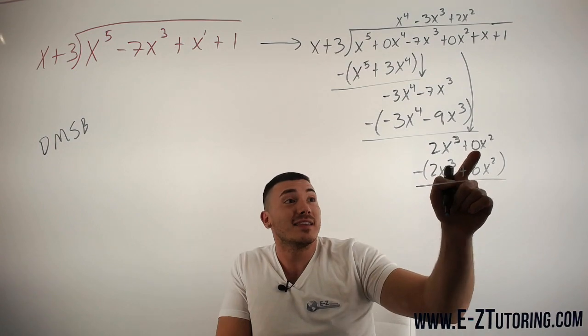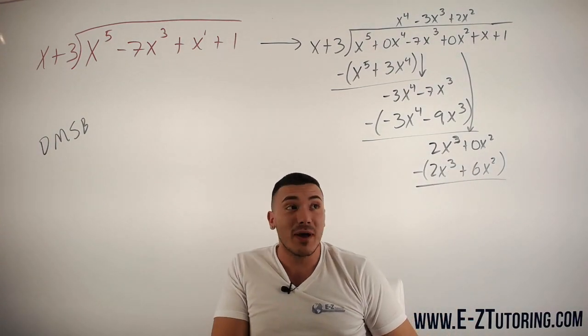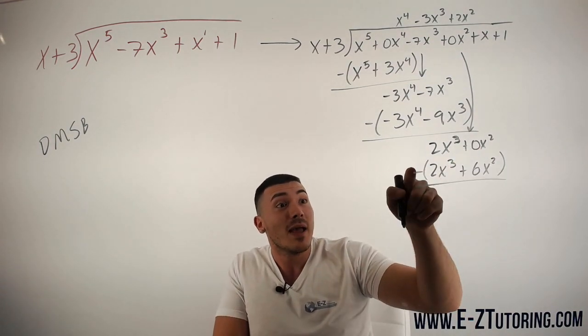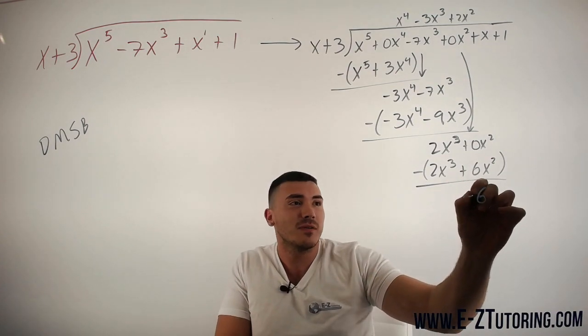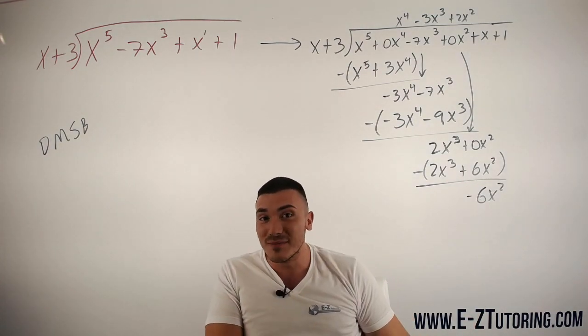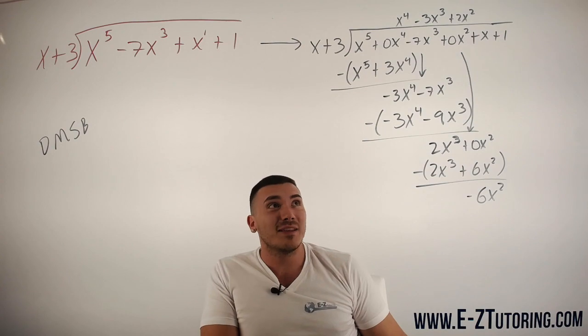Subtract all of this, and now you can see how this zero comes in so handy again because we do 0x squared minus 6x squared, which gives us negative 6x squared. Really, really important to add in those 0x's.